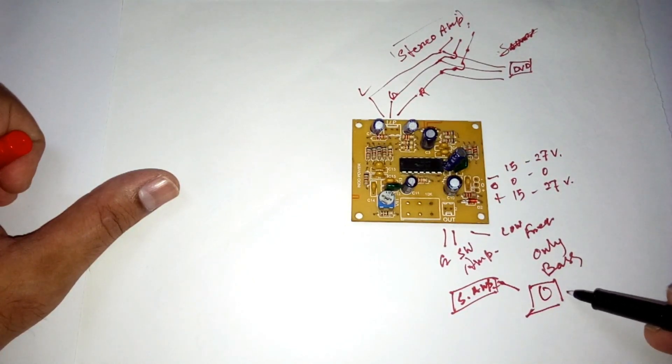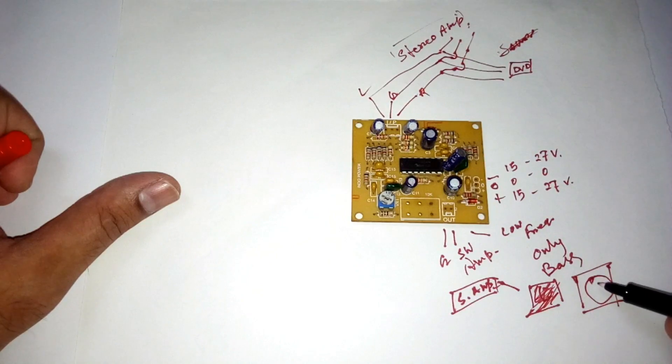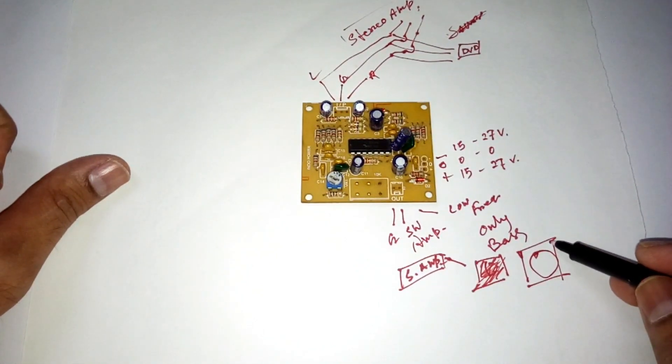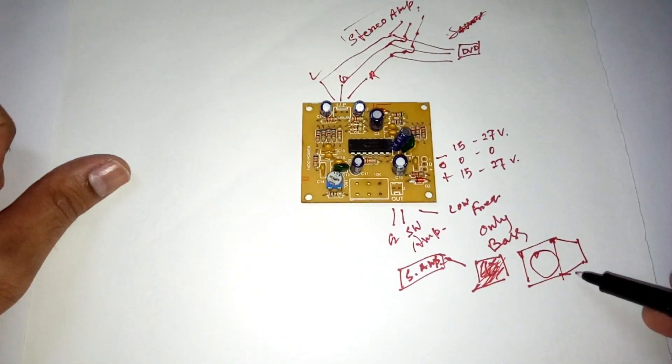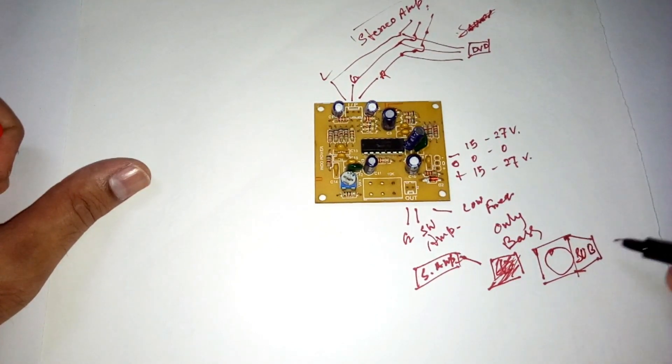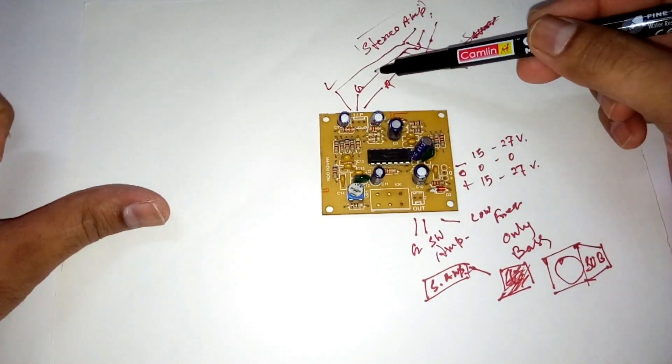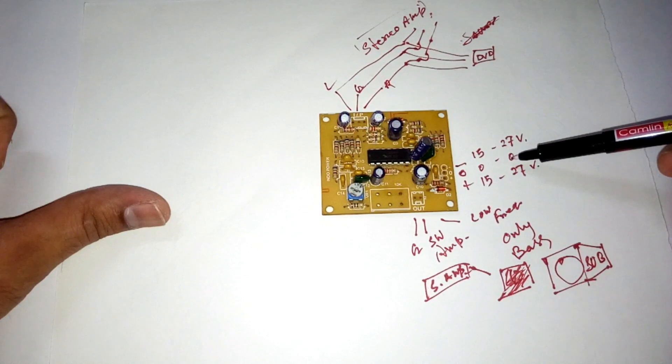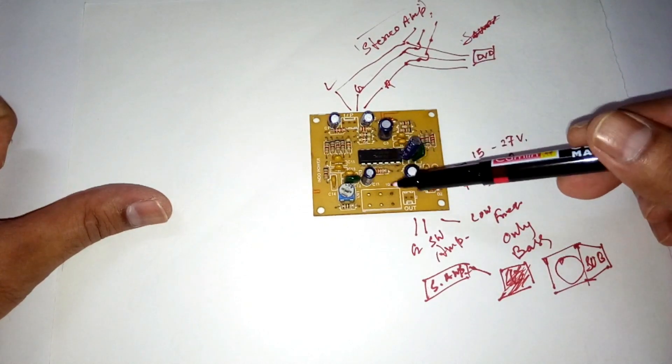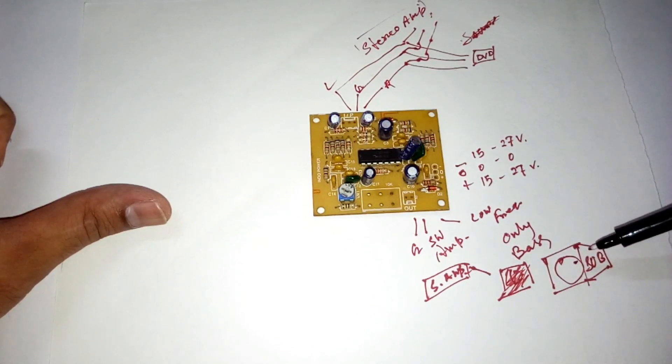This is the subwoofer. Yeah, it looks like... anyway, okay. So this is the input, your voltage, wide range of voltage. And after filtering, this comes to the subwoofer amp, and from there the subwoofer. And here you get the pure bass, only bass.